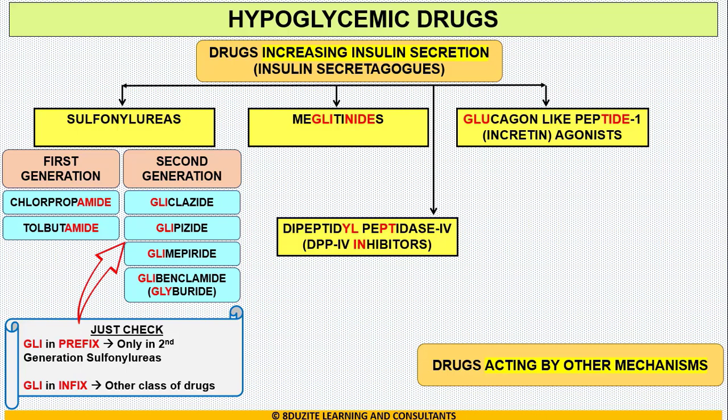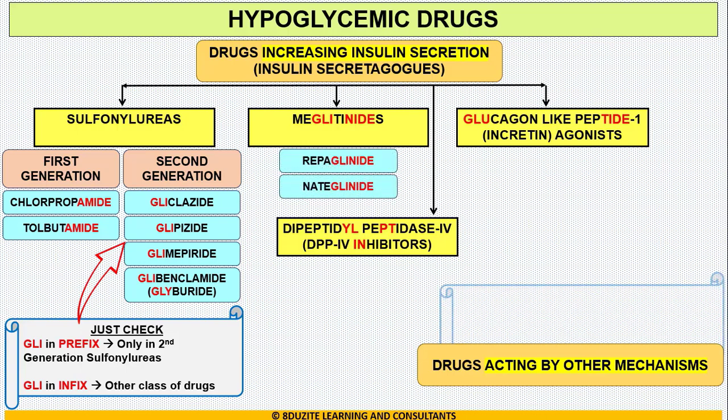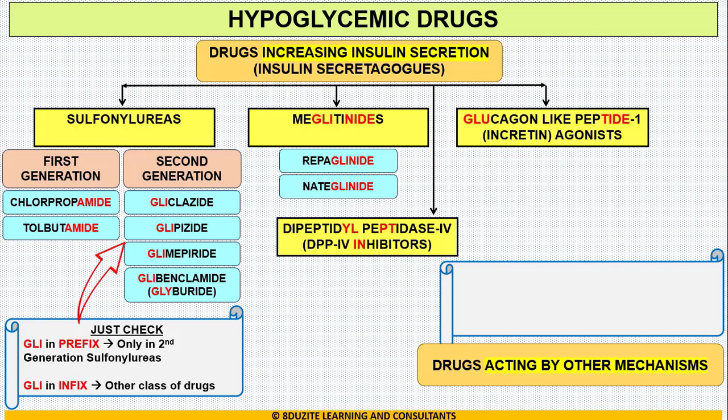Moving to meglitinides, we have two drugs: repaglinide and nateglinide. If you observe, G-L-I is coming in the middle of the word as an infix. Also, if you observe the red letter words in the box title — G-L-I and N-I-D-E — combined, it becomes glinide. So both these drugs are glinides.